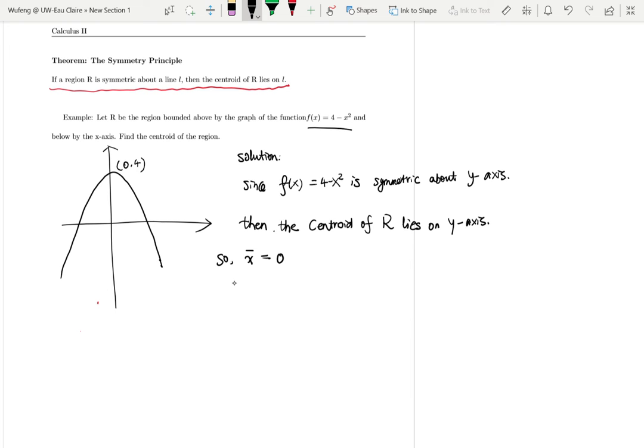So now we just need to find out the y-coordinate. The center y bar, which is the moment of x over the total mass. That is rho from negative 2 to positive 2. This is the area.